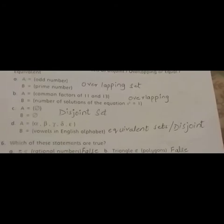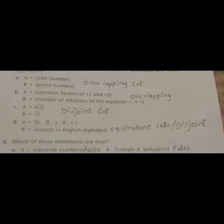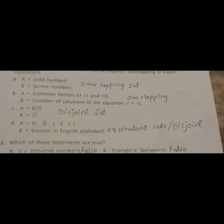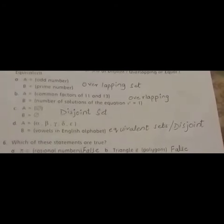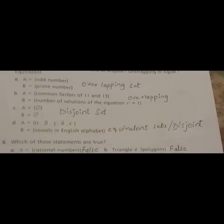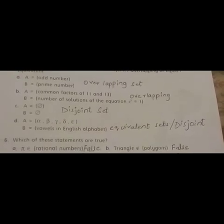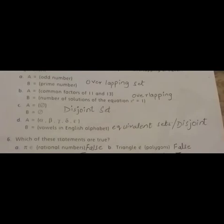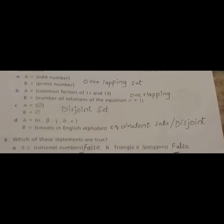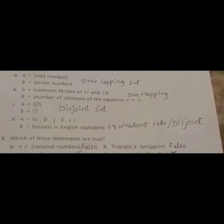Part D. Set A is equal to alpha, beta, gamma, delta and epsilon. These are five symbols. And set B is equal to vowels in English alphabet, which are A, E, I, O, U. Both sets have equal number of elements. The cardinal number of A is equal to five and cardinal number of B is equal to five. So both sets are equivalent sets. Besides that, both sets have no common element. That's why they can also be called disjoint sets.